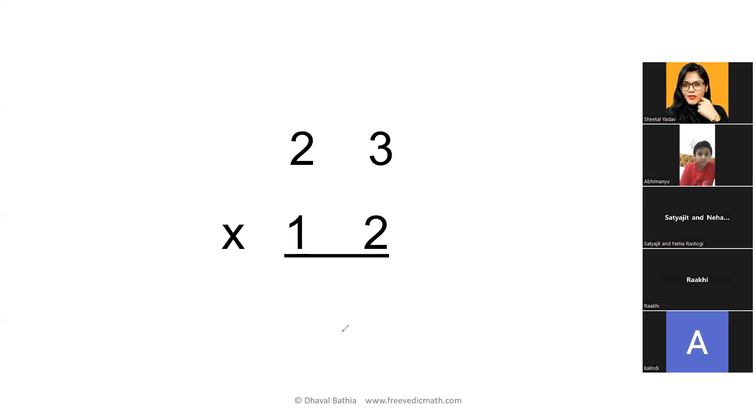In school, how do we solve such sum? The first step is to multiply this number - 2 by 3. 2 into 3, you get 6. 2 into 2, you get 4. Then, since you have 2 numbers, you'll put a 0 here. Then 1 into 3 is 3. 1 into 2 is 2. Then you add these 2 lines. 6 plus 0 is 6, 4 plus 3 is 7, and 2 plus nothing is 2. So you get the answer in 3 lines: 1, 2, and 3. But you know what? Through our Vedic maths, you can get the answer in one line.